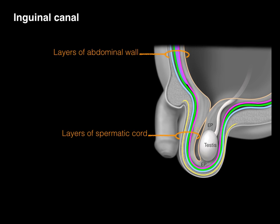Showing the layers of the abdominal wall and the spermatic cord, notice there's the peritoneal cavity. The extension of the peritoneal cavity is called the processus vaginalis — this little sac that came with the testis as it went through the wall. But the testis is not inside the processus vaginalis. The testis is in the extraperitoneal fascial layer. The processus vaginalis is a pocket of mesothelium that surrounds the testis itself with a little fluid.